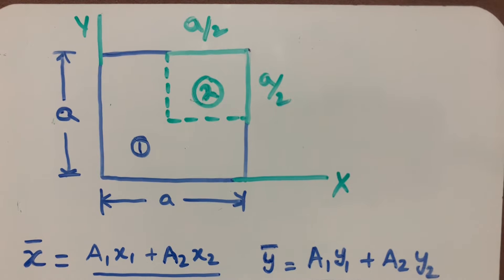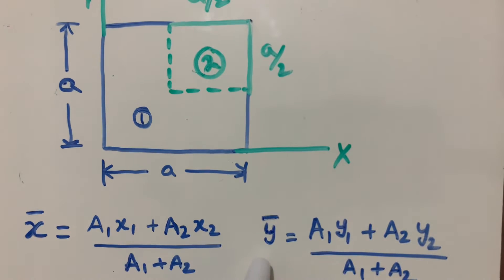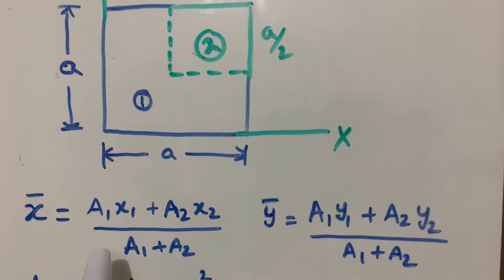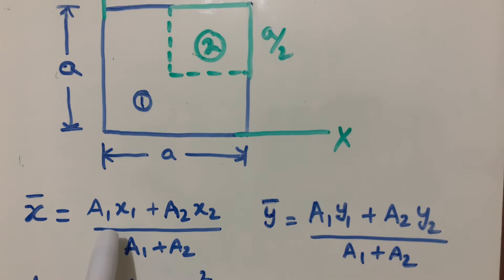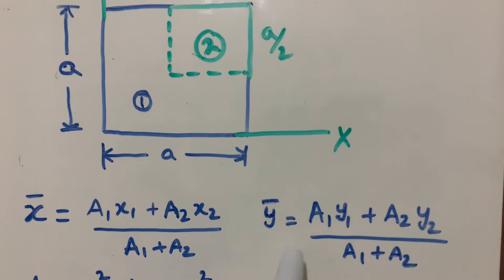In this problem we have to find x̄ and ȳ, where x̄ is the centroid along x and ȳ is the centroid along y. The formulas are: x̄ = (A1·x1 + A2·x2) / (A1 + A2), and similarly ȳ = (A1·y1 + A2·y2) / (A1 + A2). So first I'm finding the A1 value.